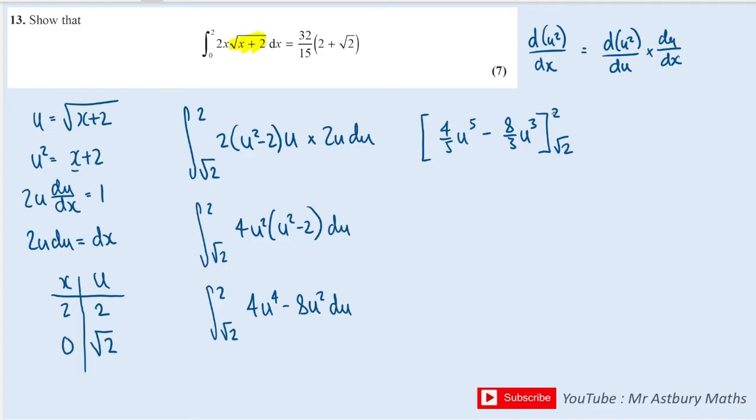Substituting in, 2 to the 5 is 32, times 4/5 is 128/5. 2 to the 3 is 8, times 8 is 64, divided by 3 is 64/3. We subtract the second bracket. Root 2 to the power of 5 is 4 root 2, times 4 is 16, then over 5, so 16/5 root 2.